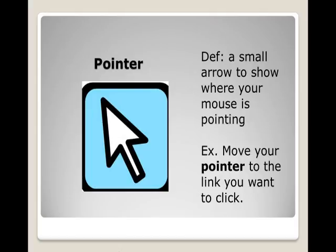Pointer. Definition: A small arrow to show where your mouse is pointing. Example: Move your pointer to the link you want to click.